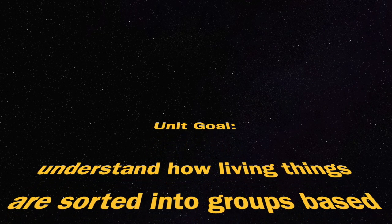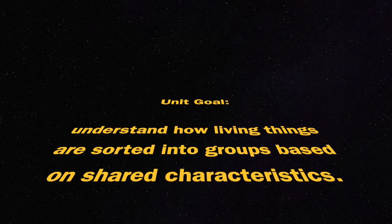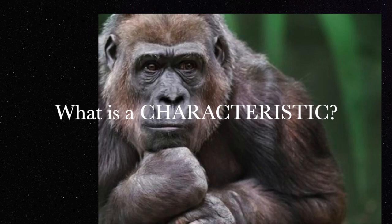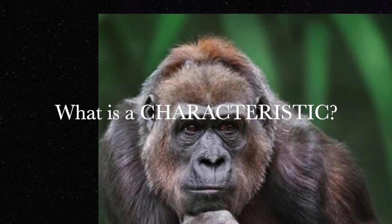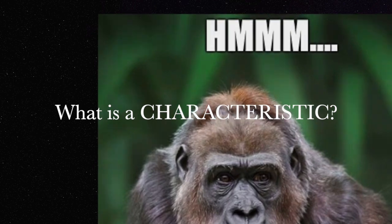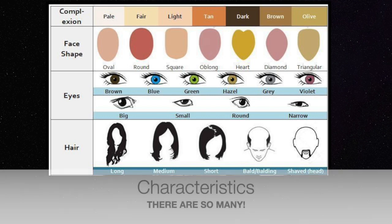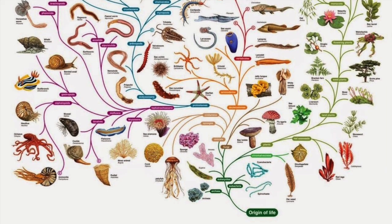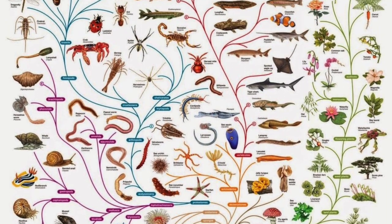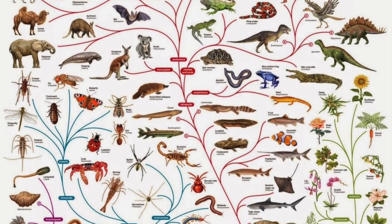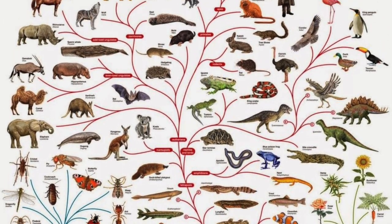The goal for this unit is to understand how living things are sorted into groups based on shared characteristics. What is a characteristic? Think about yourself for a minute — do you have brown hair, blonde hair, blue eyes, brown eyes, green eyes, are you tall or short? These are all examples of characteristics, and this can apply to all living things. This is what helps biologists classify all the different types of species on planet earth.